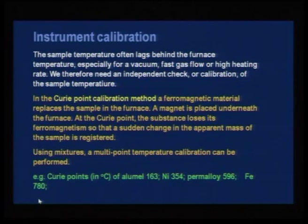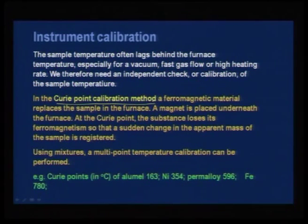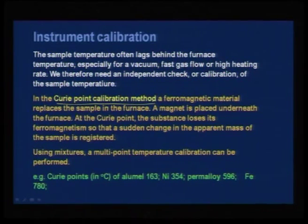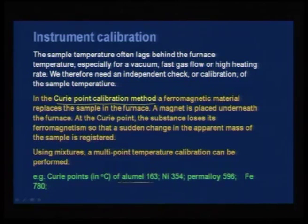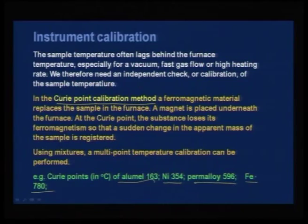TGA involves instrument calibration — weight calibration and temperature calibration are both needed. Today many instruments allow zeroing and adjusting error for temperature. Several standards are available, like alumel, nickel, permalloy, and iron — all having Curie points at specific temperatures — which can be used for internal calibration.